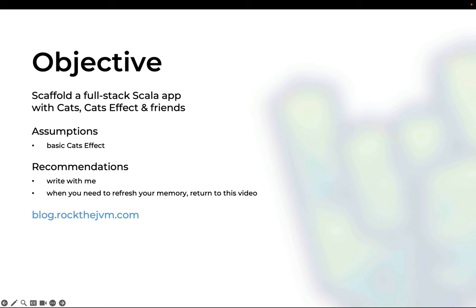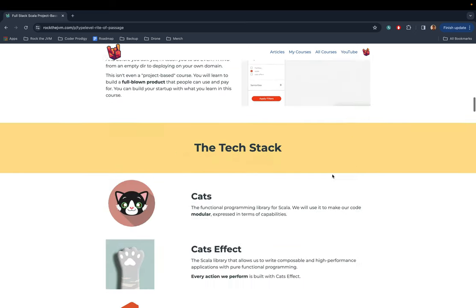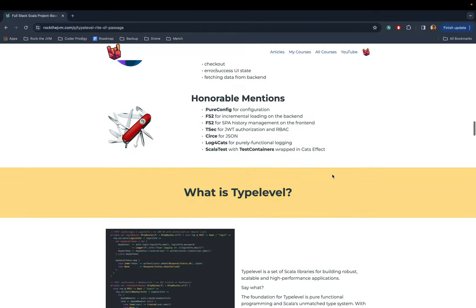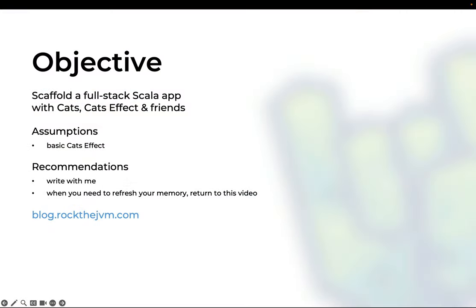We have a couple of videos on the Rock the JVM channel detailing those. I'm also going to leave a GitHub repository in the description with a start tag you can use to start from almost scratch and write along with this video, which is the best way to make the most out of it. I'll also write a tutorial on the blog at blog.rockthejvm.com. This tutorial contains some of the basic ideas behind my giant course called the Typelevel Rite of Passage, one of my biggest courses on Rock the JVM, which shows you how to build a production-grade full-stack Scala 3 application including the front-end.